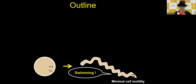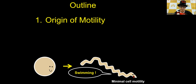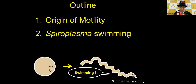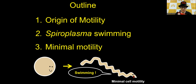This is the outline of my talk today. First, I'll introduce what is the original motility. Then the next introduction is what is spiral plasma swimming, which we use as the target of this reconstitution system.